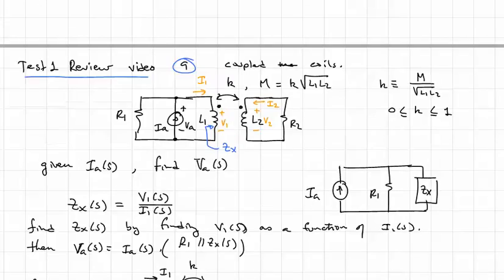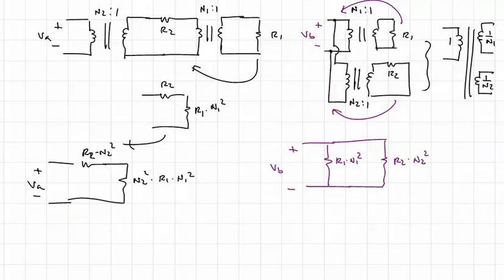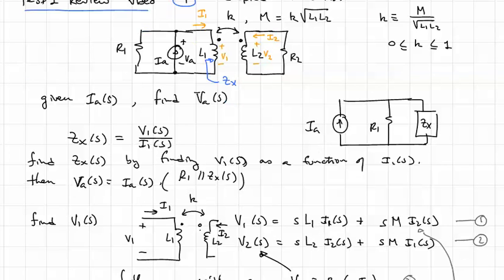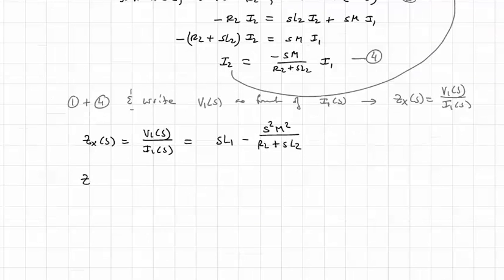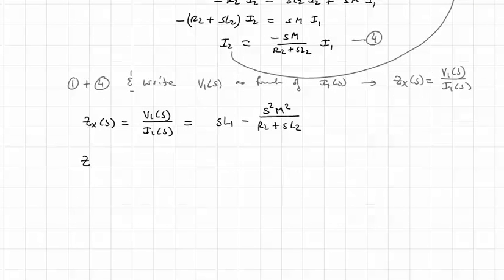And finally, we'd go back and say, now our impedance, our voltage VA that we're going after is IA times R1 in parallel with that ZX. So that ZX should be equal to, oh wait, I did write that already. Okay, we'll stop here. But you'd use ZX to find VA as the problem had requested.